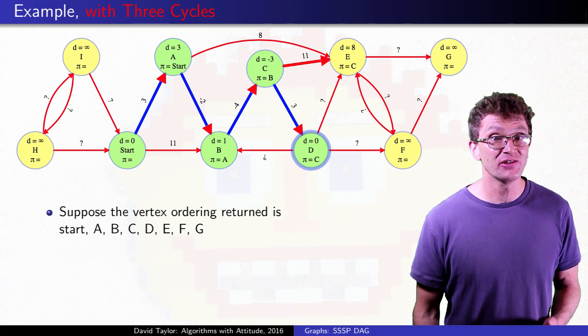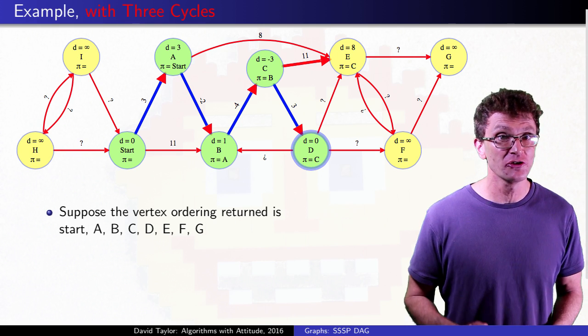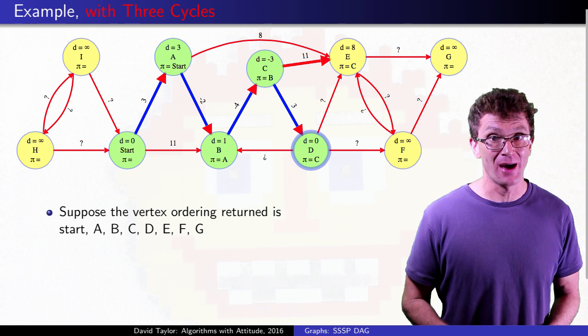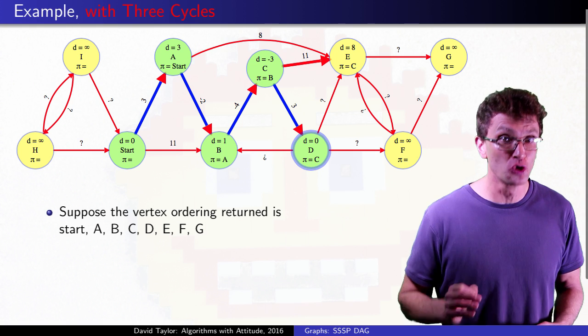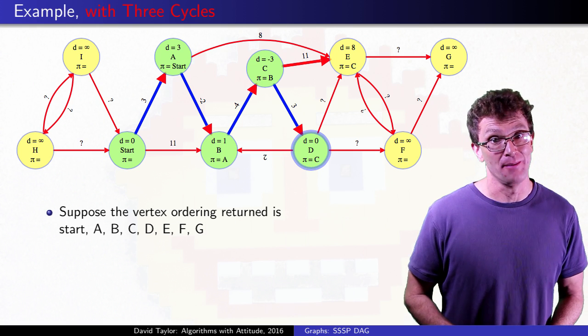For D, it has an edge to B, but assuming no negative weight cycles, no matter the edge weight, it cannot give a shorter path to B in this graph. Because the only way to get to D is through B. So even though it is a cycle, it won't mess us up.